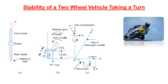v is the linear velocity of the vehicle, where v = rw × ωw. θ is the angle of heel — the inclination of the vehicle to the vertical for equilibrium. When the vehicle takes a turn, the two-wheeler tilts with respect to the vertical as shown in the diagram, and this inclination angle θ is the angle of heel.